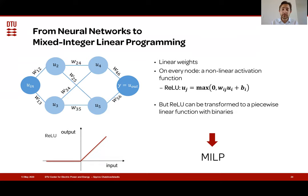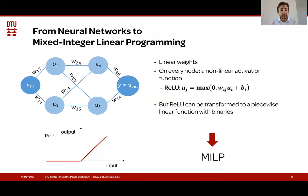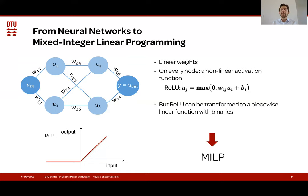This approach has already been used for neural network verification, and we have also done some work on that. But we can also use this for capturing constraints, correlations, or insights that are impossible to capture in any other way. We are able to capture these through the neural network and then convert this information into an analytical constraint inside the mixed integer linear program. This can become really, really powerful.